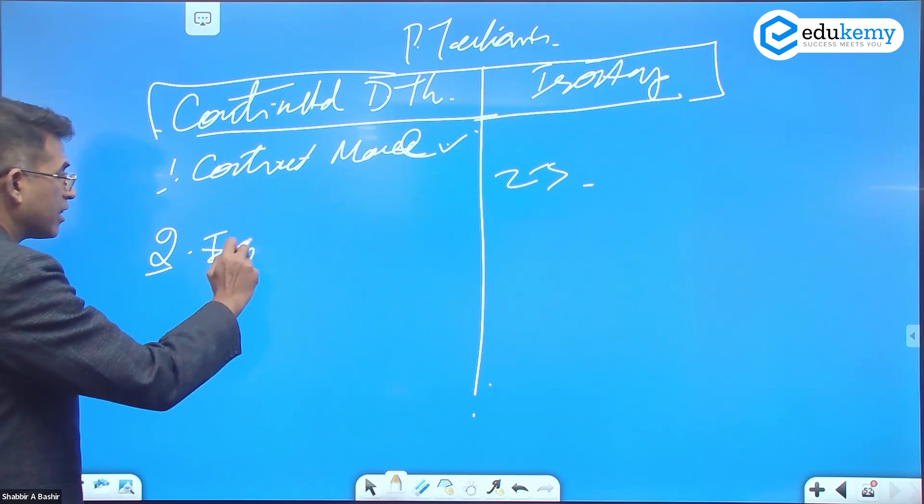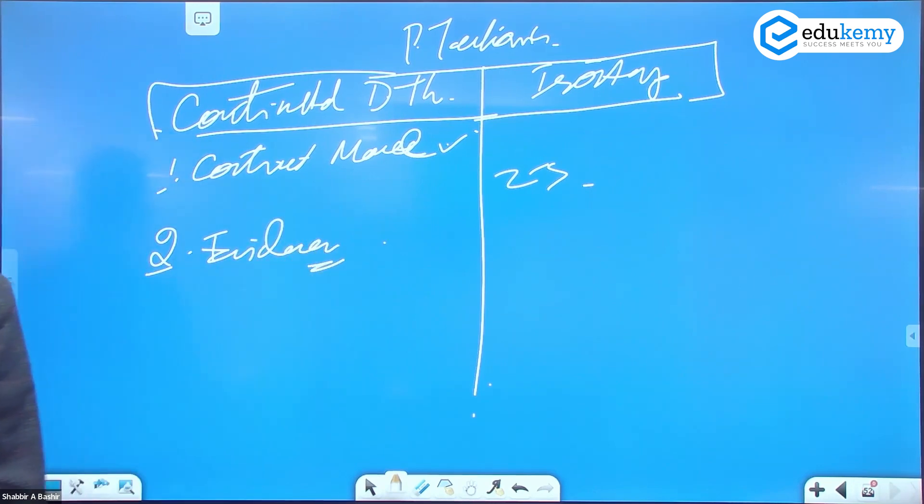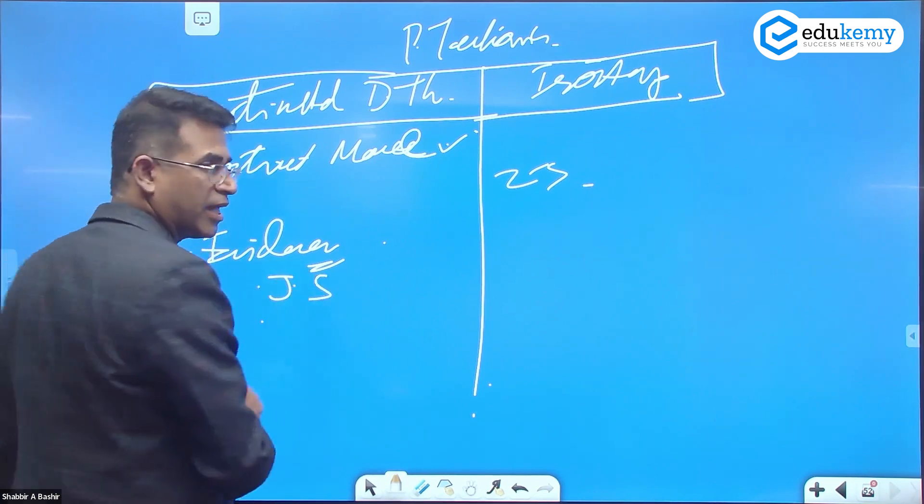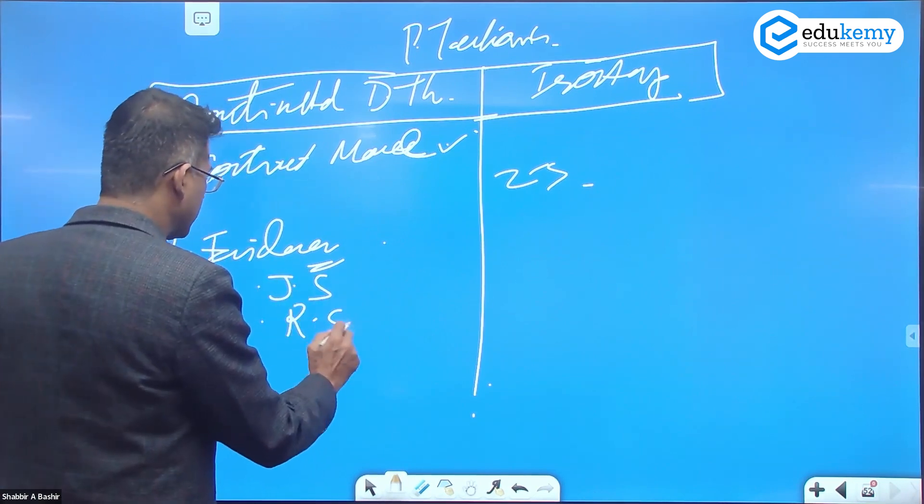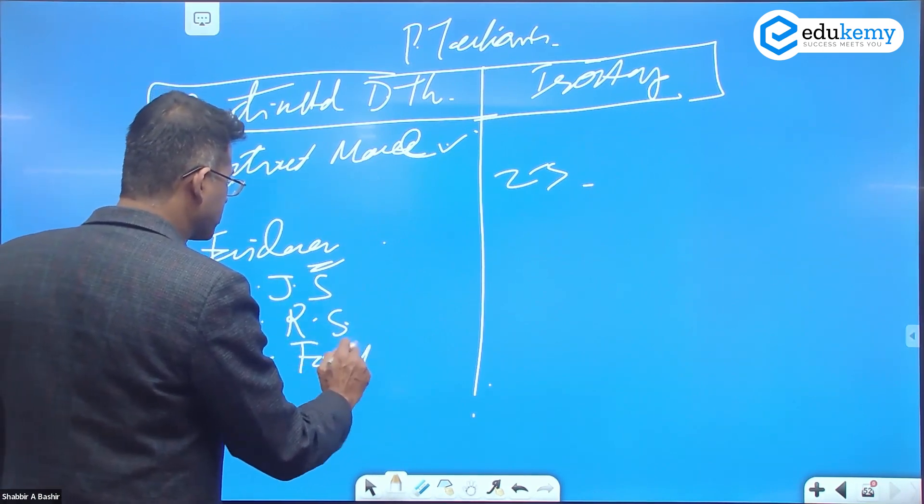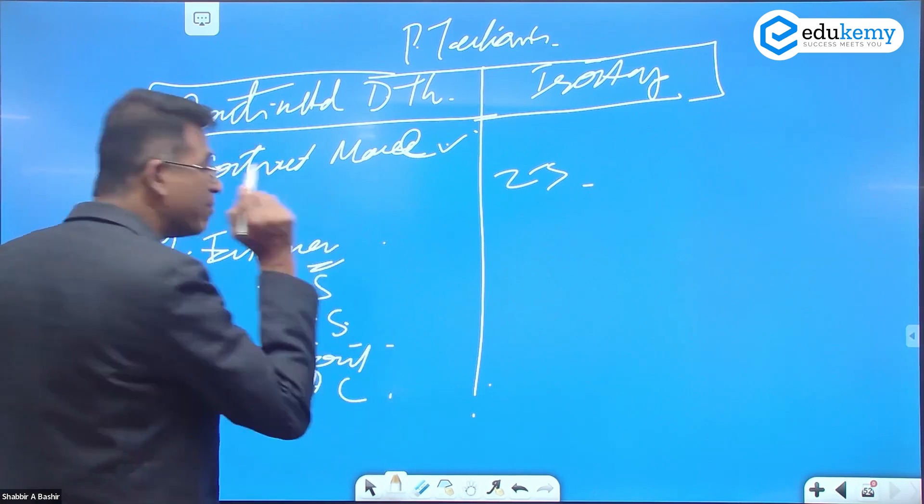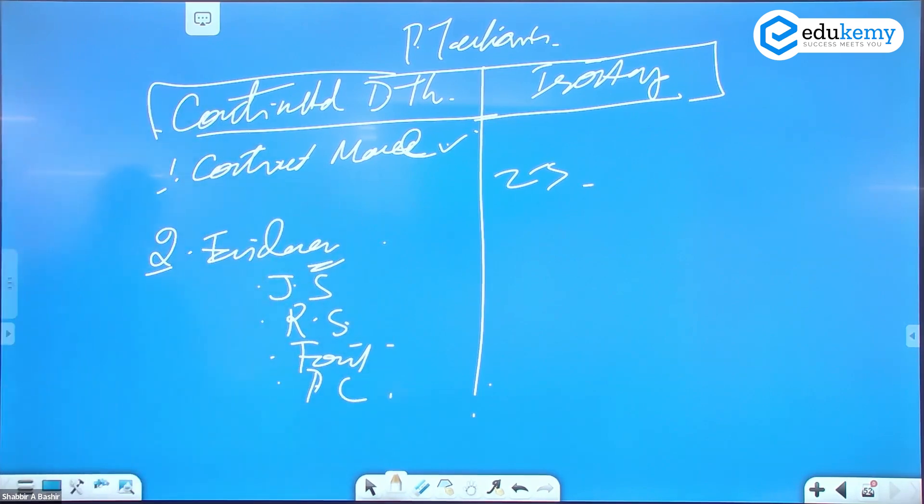What else? I said yesterday the evidences. The evidences are all valid - the jigsaw fit evidence, the evidence of rock structure, the fossil evidence, and the paleoclimatic evidence. These are all valid evidences.